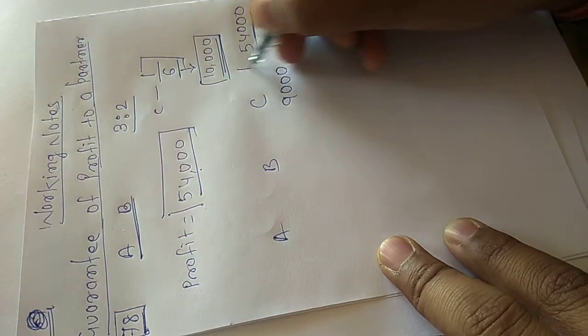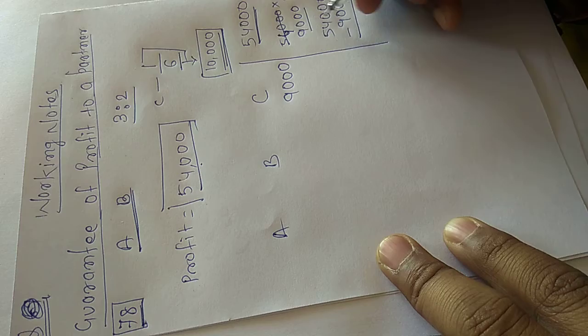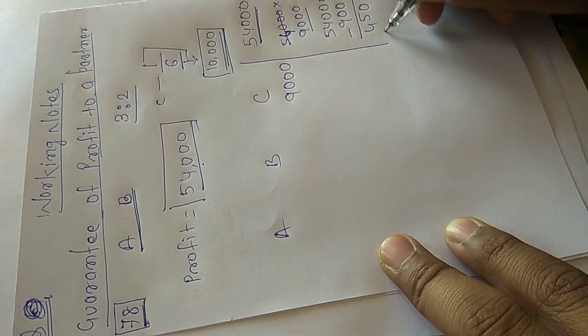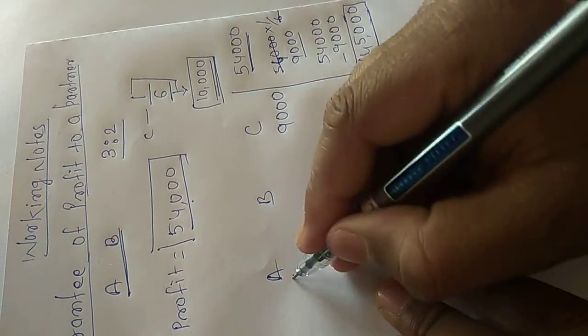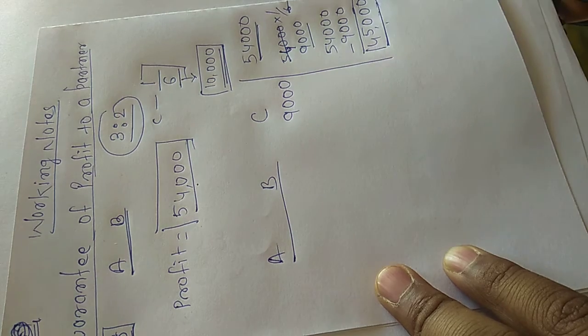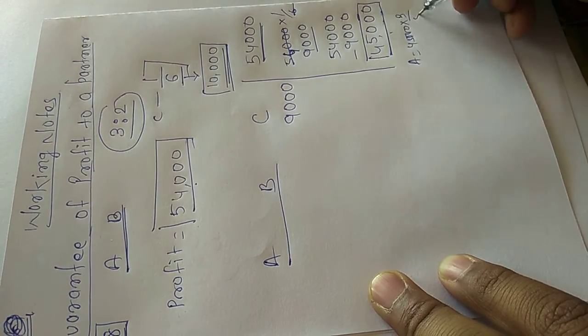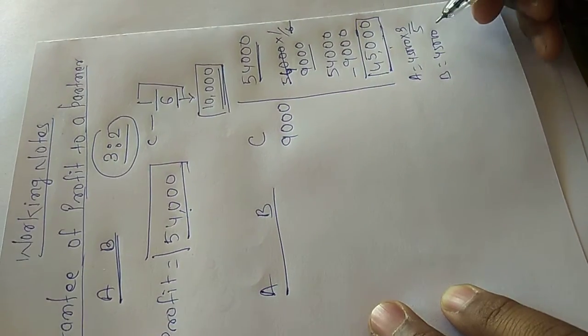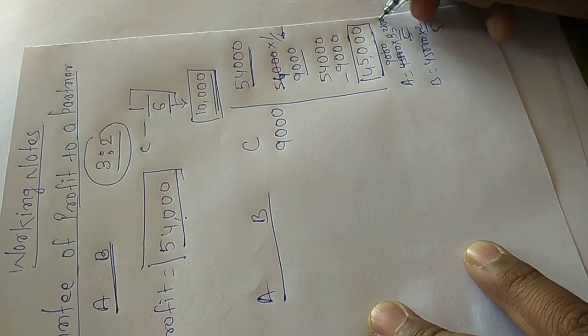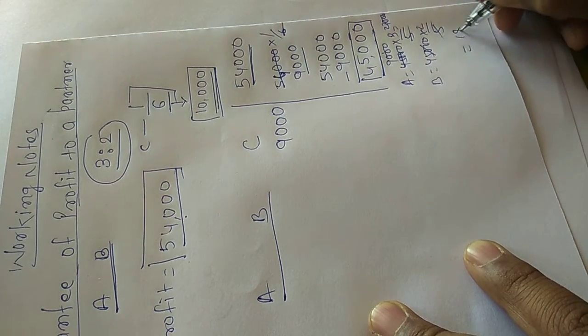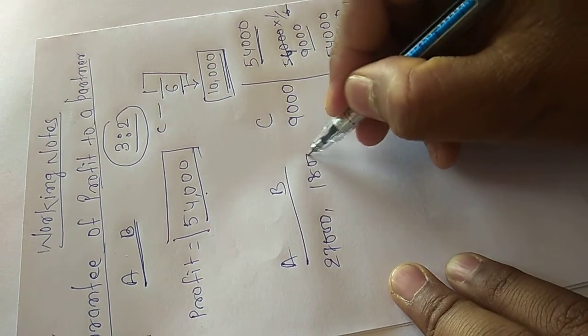And remaining profit. So remaining profit is 54,000 less 9,000 of C share, 45,000. And this 45,000 will distribute to A and B in their ratio 3 is to 2. So A share is equal to 45,000 into 3 by 5, and B share is equal to 45,000 into 2 by 5. So A gets 27,000 and B gets 18,000.